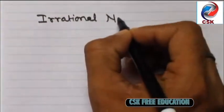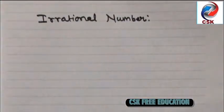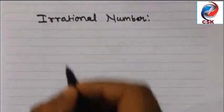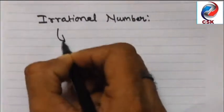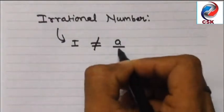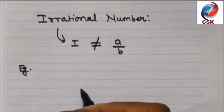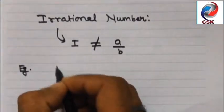My dear students, if you have not watched the video of rational number please click on the above link. Any number which cannot be written in the form of a by b is irrational number where a is the numerator and b is the denominator.